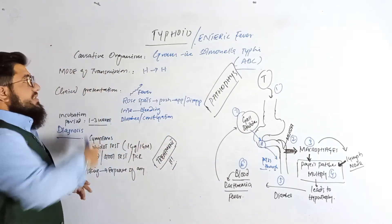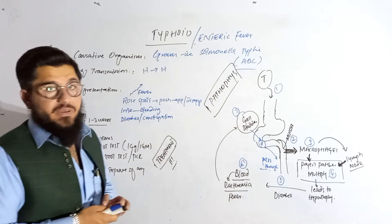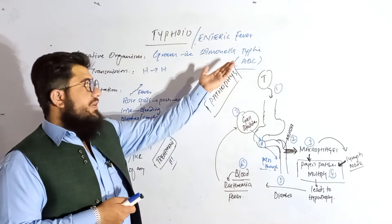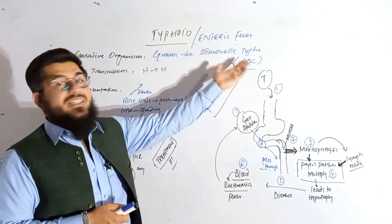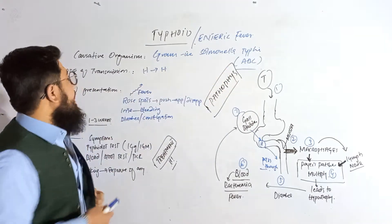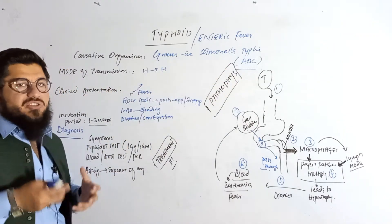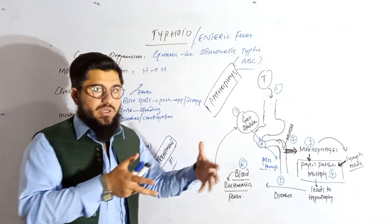Causative organism: gram-negative Salmonella typhi, which is actually a rod-shaped bacteria. There are three types of the Salmonella typhi: A, B, and C. The mode of transmission is simple. It is transmitted from human to human. An infected human is responsible to transmit this particular bacteria to another human.